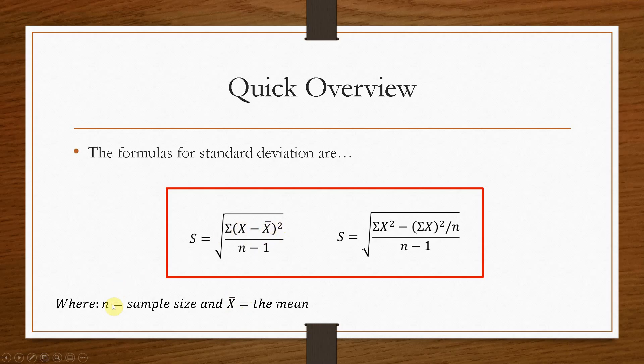And the lowercase n is the sample size. So that's how many numbers in your data set do you actually have. So if you had 10 numbers, your n value would be 10. Likewise, if you had 6 values, your n would be 6.